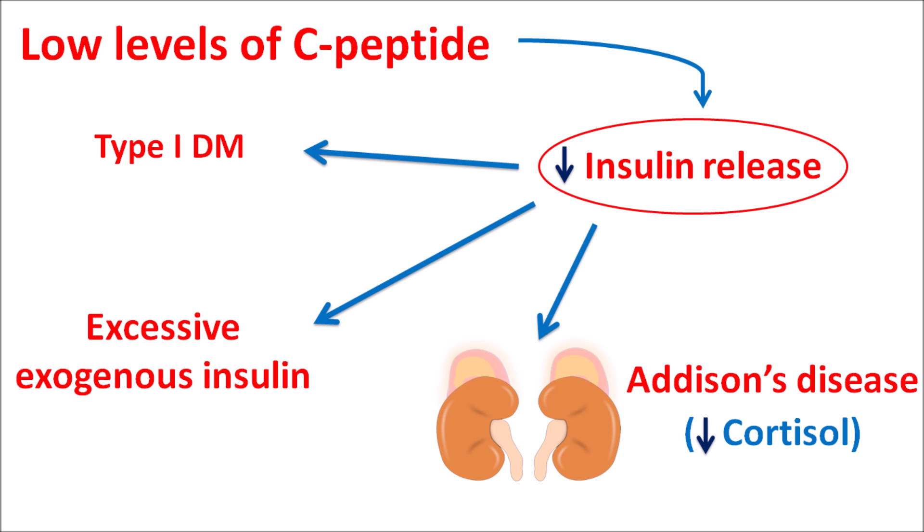In summary, C-peptide levels can be tested to assess many conditions. When elevated, they indicate increased release of insulin associated with type 2 diabetes, insulin resistance, insulinomas, drug usage such as sulfonylureas, incretin mimetics, and DPP-4 inhibitors, or metabolic conditions like hypokalemia, renal failure, or Cushing's syndrome. Low C-peptide levels are observed in type 1 diabetes, administration of exogenous insulin, Addison's disease, and liver failure.